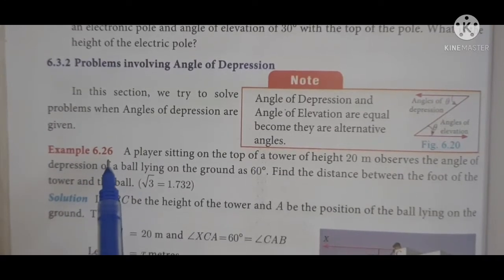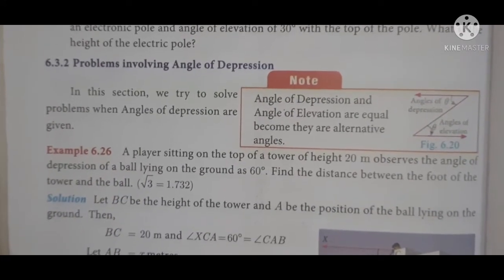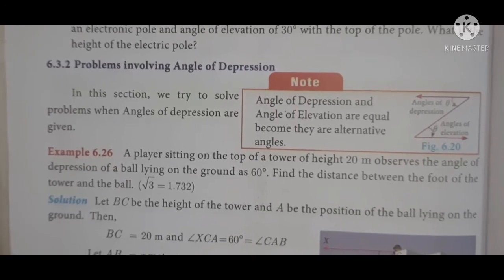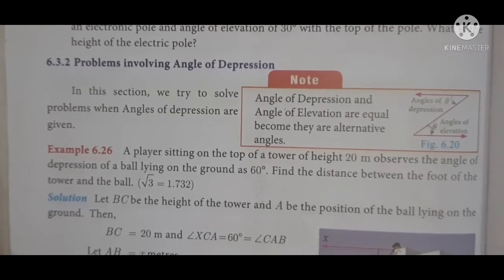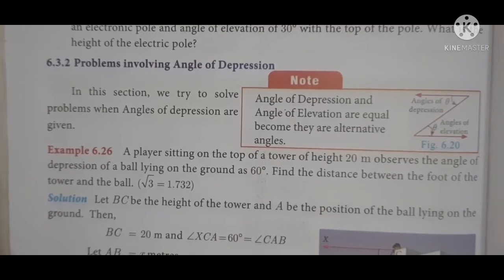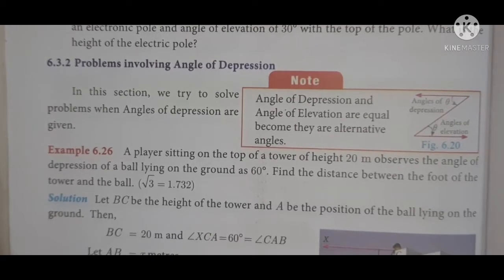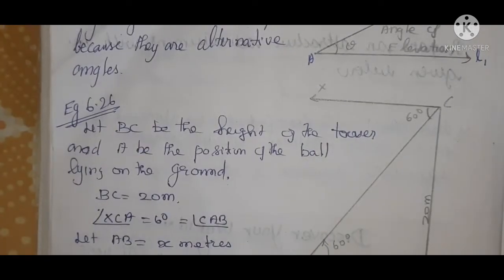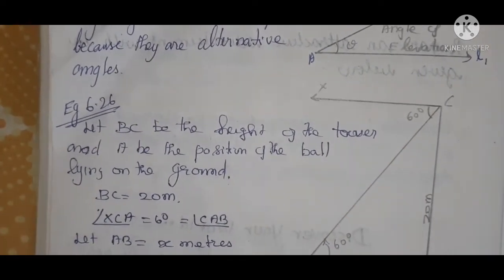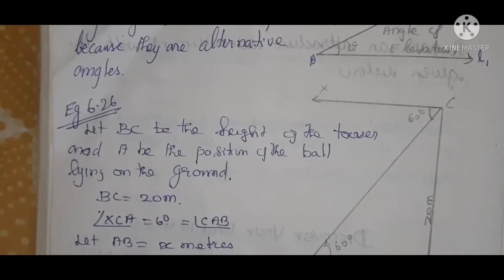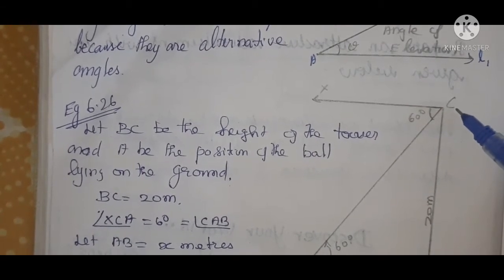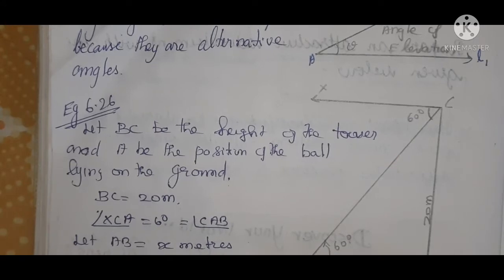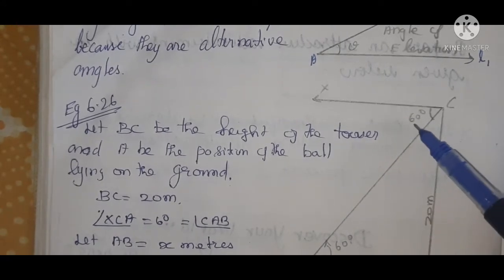Example 6.26: A player sitting on the top of a tower of height 20 meters observes the angle of depression of a ball lying on the ground as 60 degrees. Find the distance between the foot of the tower and the ball, using √3 = 1.732. BC is the height of the tower. A player is sitting at the top, viewing a ball on the ground at an angle of depression of 60 degrees.